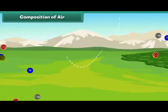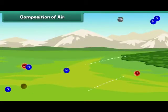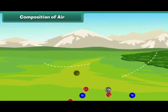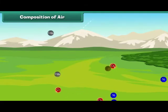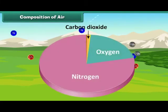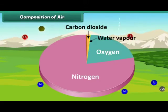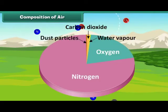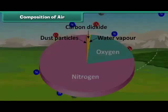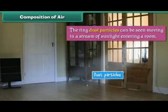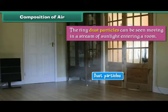Air is made up of several gases, the most important being nitrogen, oxygen, and carbon dioxide. Air also contains water vapour and dust particles. The tiny dust particles can be seen moving in a stream of sunlight entering a room.